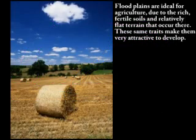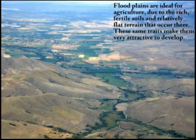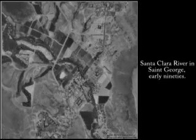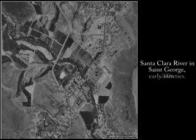Some of the most desirable agricultural lands in the United States are in the floodplain. Development often occurs in the floodplain because of the rich, fertile soils that occur there. For instance, watch how development has occurred in the areas adjacent to the Santa Clara River from the early 1990s to 2006.